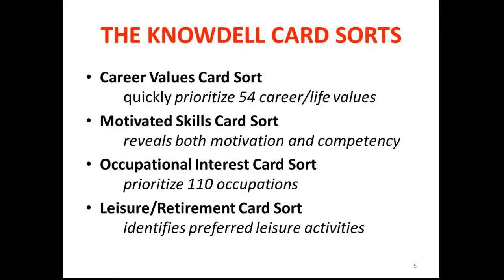The four card sorts I want to talk about are: first, the Career Values Card Sort, a deck of cards with 54 career life values. The second is the Motivated Skills Card Sort, a more complicated instrument that reveals both motivation and competency. The third is the Occupational Interest Card Sort, where the client prioritizes 110 occupations to come up with a handful most interesting to them. And finally, the Leisure Retirement Card Sort, which identifies preferred leisure activities for the client.